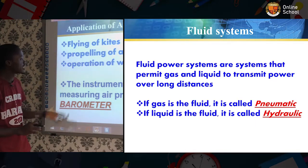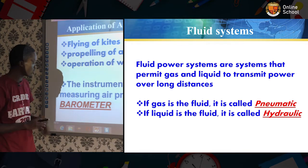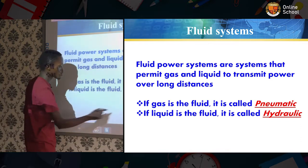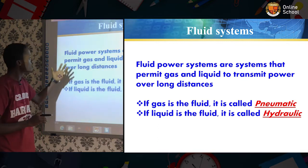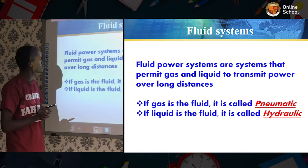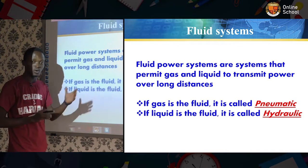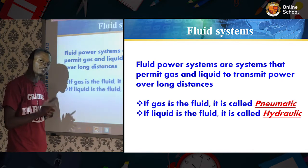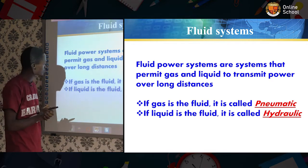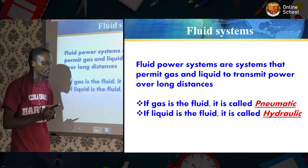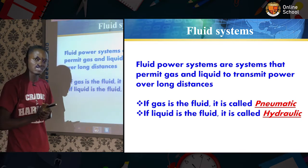The instrument used in measuring air pressure is called a barometer. Next, we will be considering fluid systems. Fluid power systems are systems that permit gas and liquid to transmit power over long distances. Two of these include pneumatic and hydraulic. If gas is the fluid, it is called pneumatic; if liquid is the fluid, it is called hydraulic.